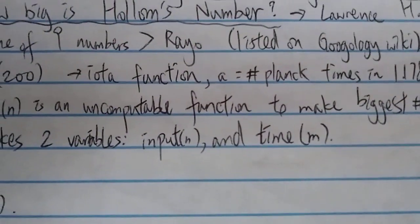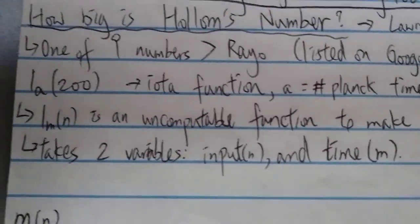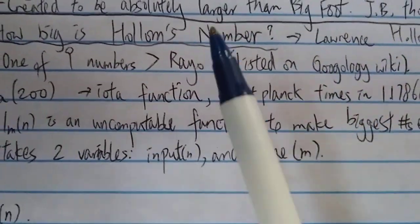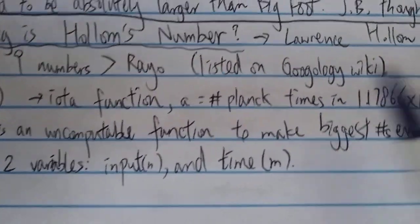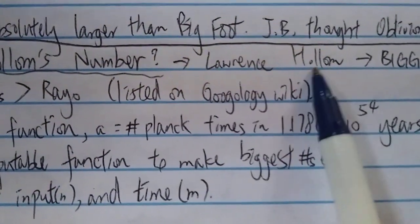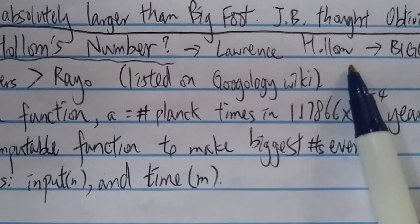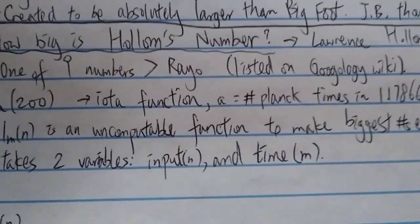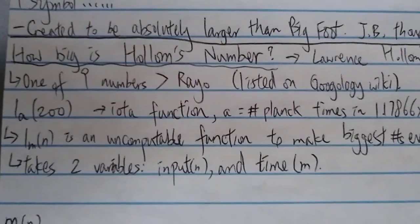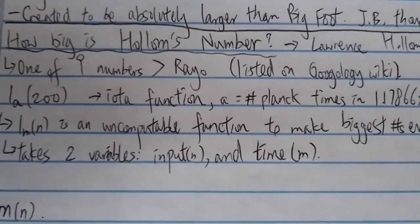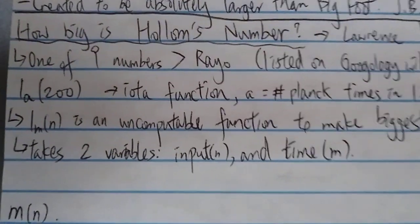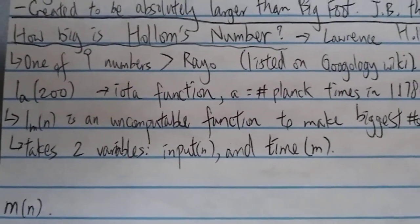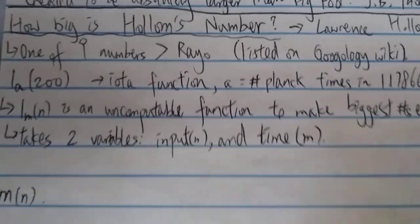And of course, bigger than Fish number seven and those numbers. But obviously it's ill-defined. But it is actually listed on Googleology wiki, I guess because this person is quite famous in the Googleology wiki. But I think some people, even myself, have created something similar. So anyway, this is how big is Hallam's number. It is well-defined, it could be the biggest named number, but actually it's not, it's ill-defined. Anyway, thanks for watching and have a nice day.